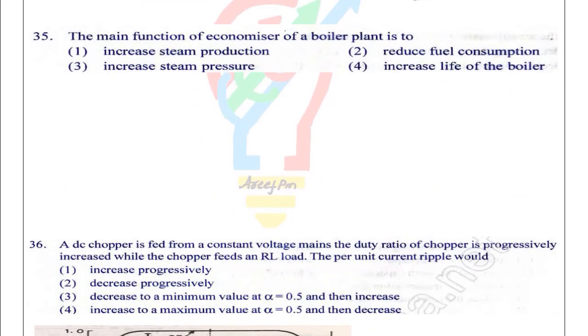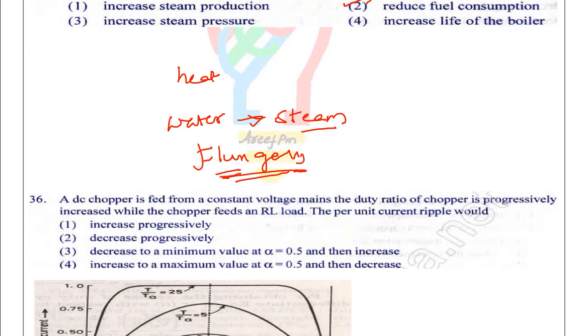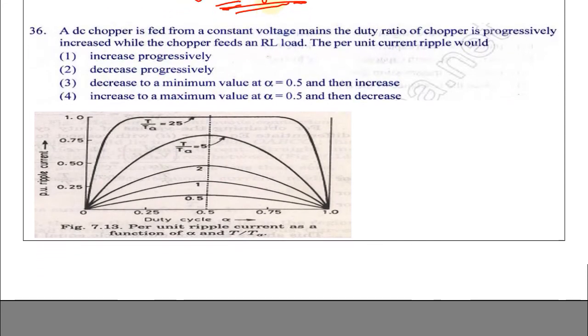Next one: The main function of an economizer of a boiler in a plant is to reduce fuel consumption. It uses the flue gases from the boiler to convert the water into steam, reducing fuel consumption for making water into steam.